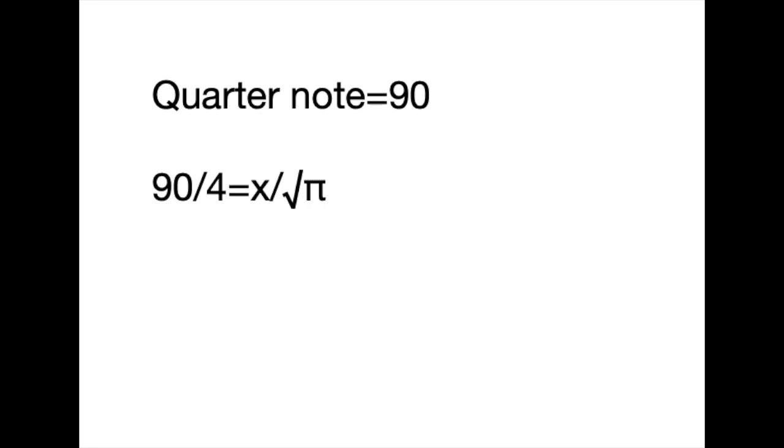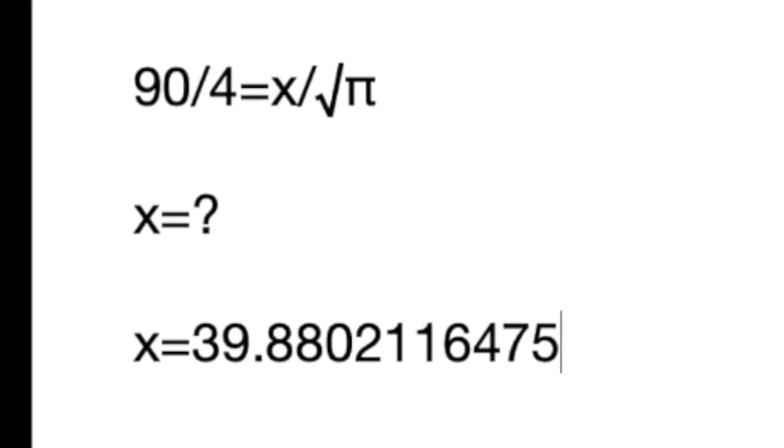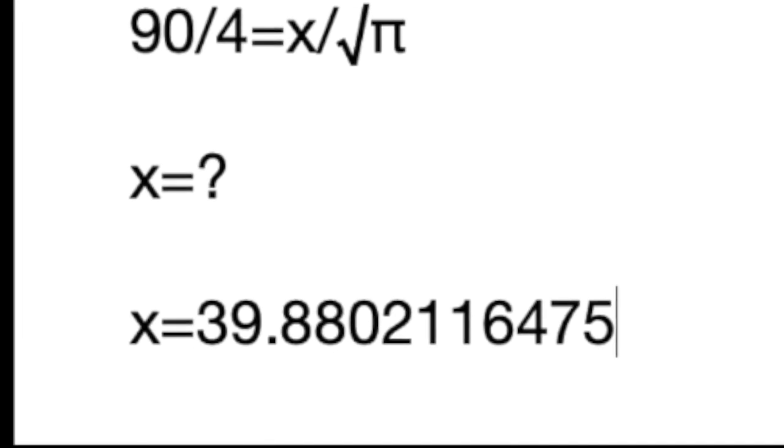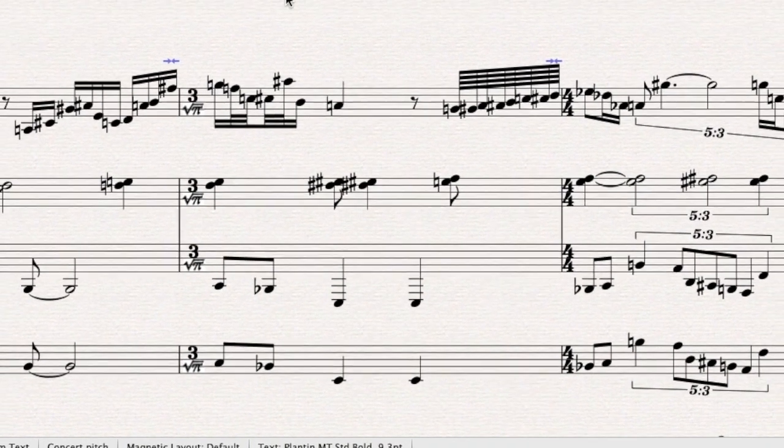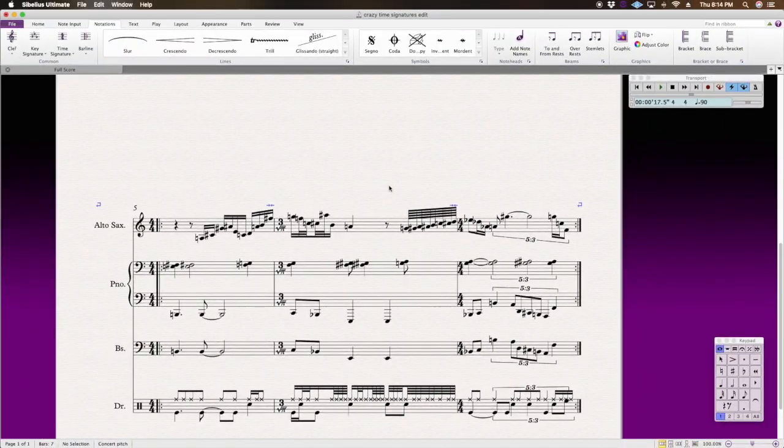So let's set up our equation again. In our original tempo, quarter note equals 90. We do 90 divided by 4 because we're in 4-4. So 90 over 4 equals X over 1.772453851. Then you solve for X. You find out that X, in other words, our new tempo, is 39.8802116475. Now that's a very precise tempo. You could probably just round out to X equals 40, and a listener would never really hear the difference in that subtle gradation of time. I used the more complex number just to be as accurate as possible. That's going to be our temporary tempo for this 3 over the square root of pi measure.